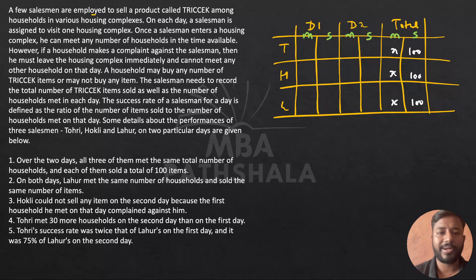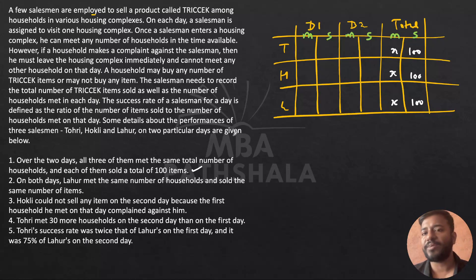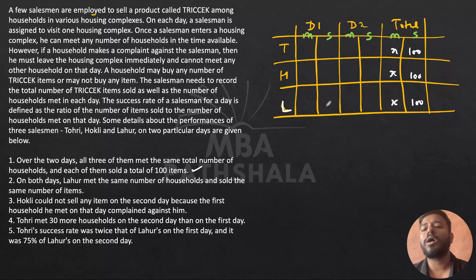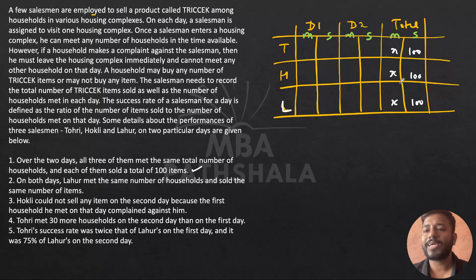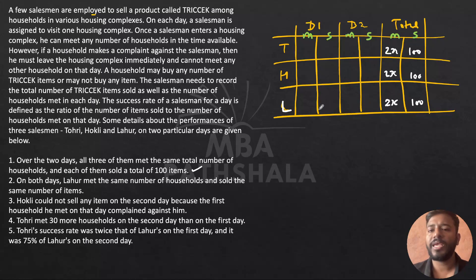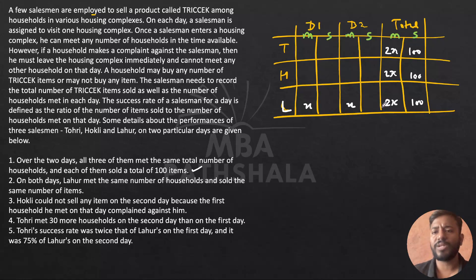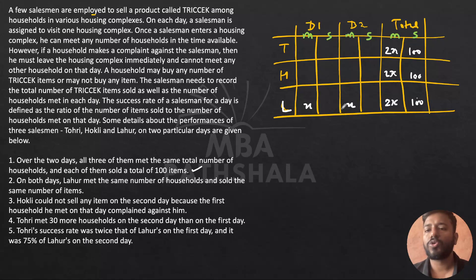On both days, Lahur met the same number of households and sold the same number of items. Since his total households met is 2x and both days are equal, each day he met x households. Since his total items sold is 100 and both days are equal, he sold 50 items on each day.